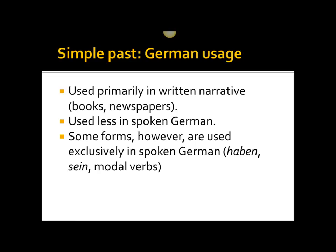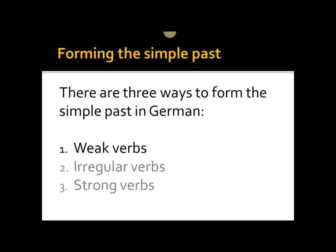There are three ways to form the simple past in German, depending on whether you have a weak verb, an irregular verb, or a strong verb. Today I'm going to be focusing primarily on weak verbs, and other lectures in the future will look specifically at irregular verbs and strong verbs. Breaking it down this way makes it more manageable, creates shorter videos, and gives you more memorable chunks to learn from.